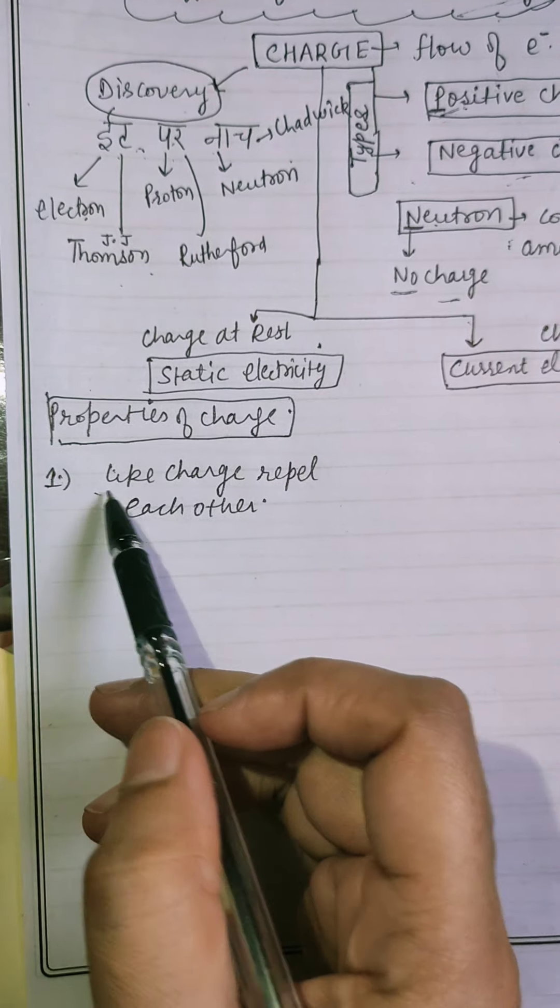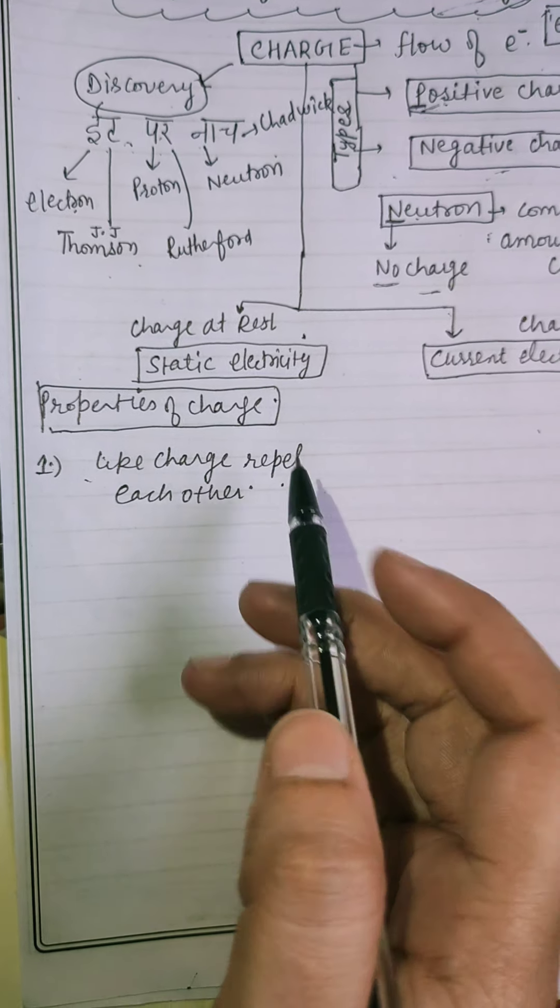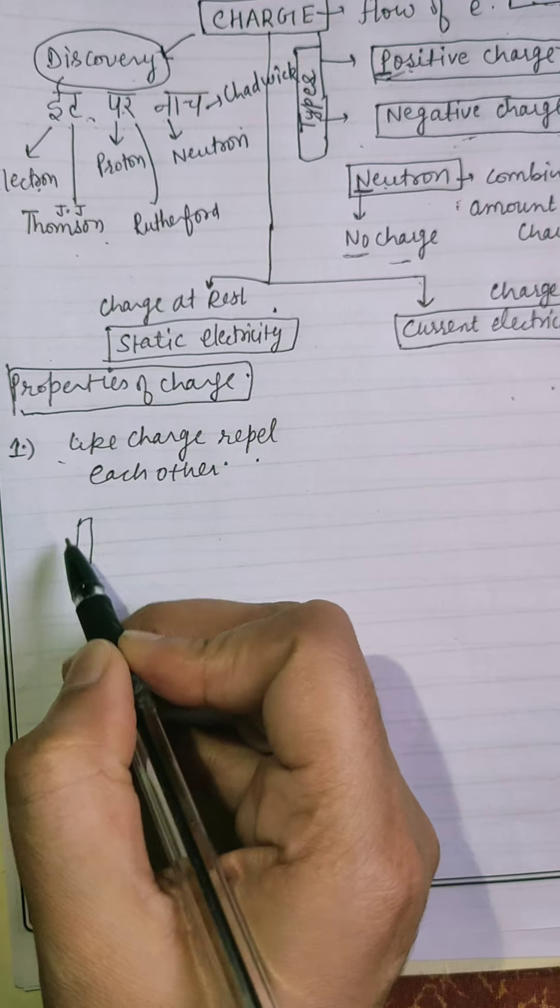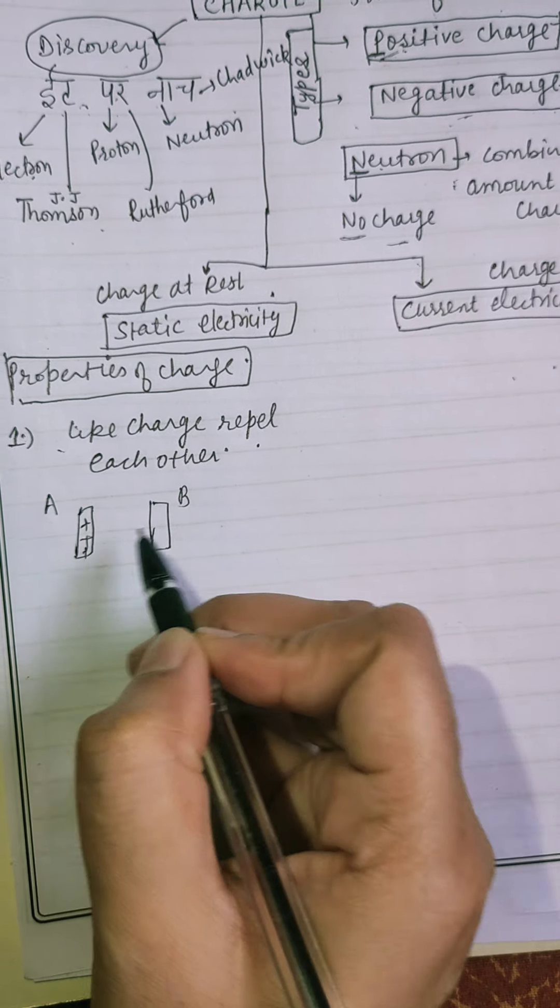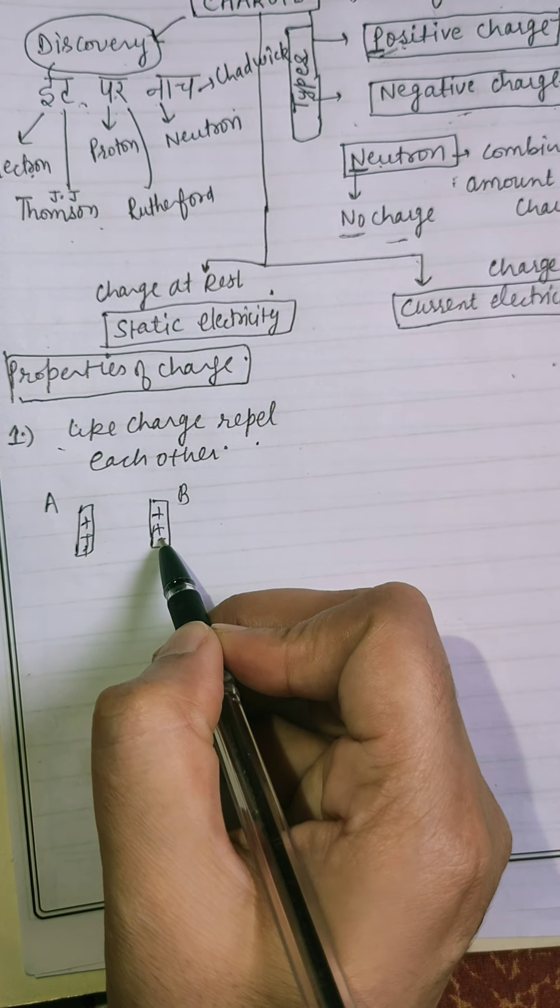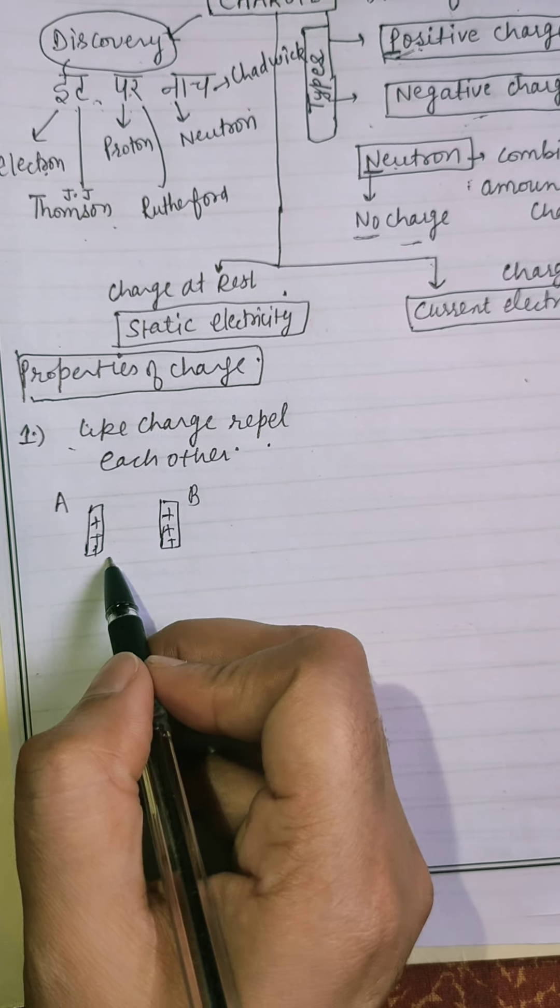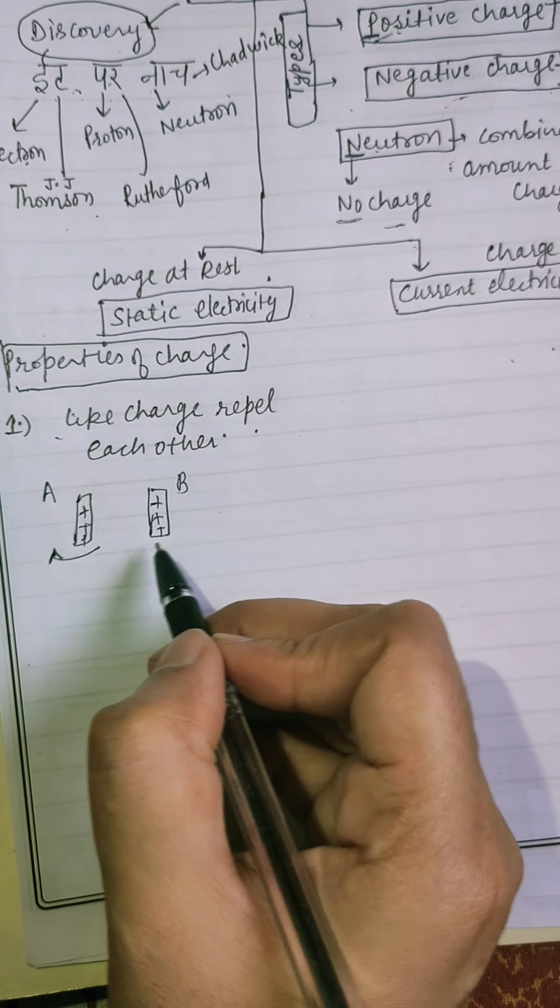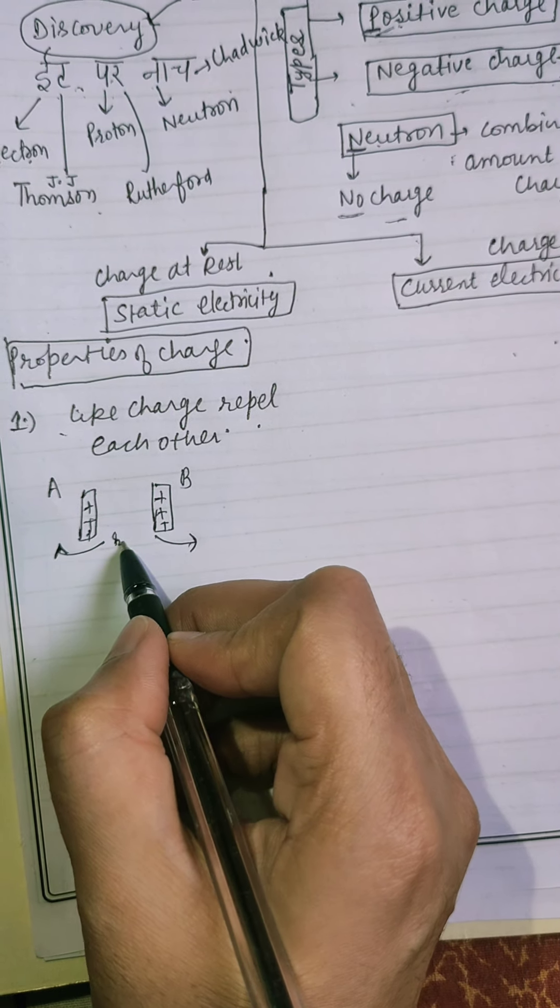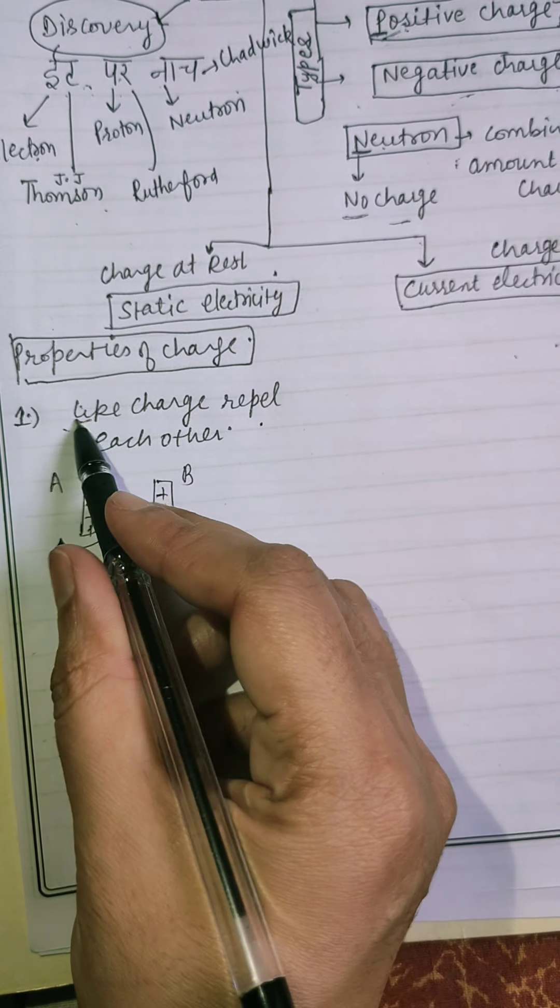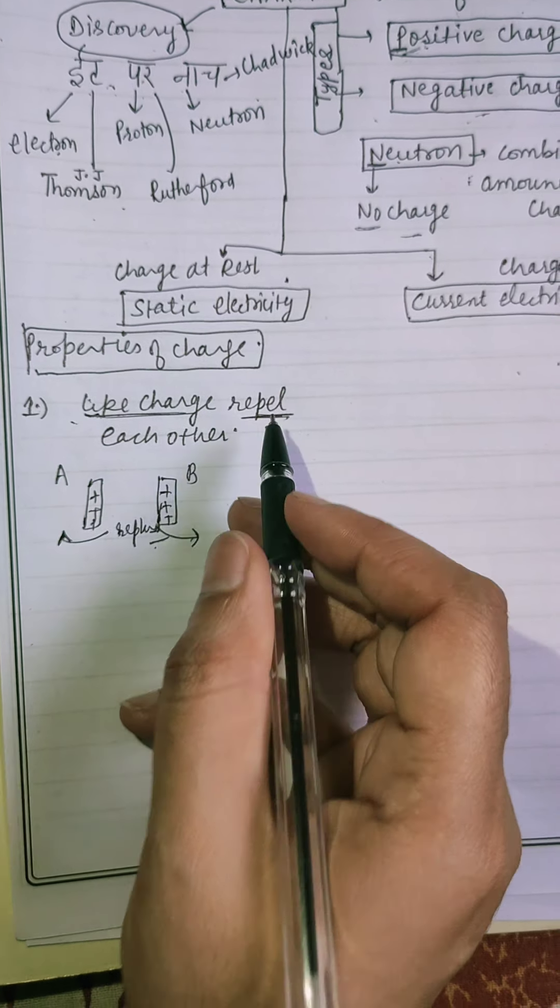First, like charges repel each other. For example, if you have a rod A and another rod B. A having positive charge and B also having positive charge. In this case, A move in this direction and B move in this direction. Here is force of repulsion. So, in case of like charges, they repel each other.